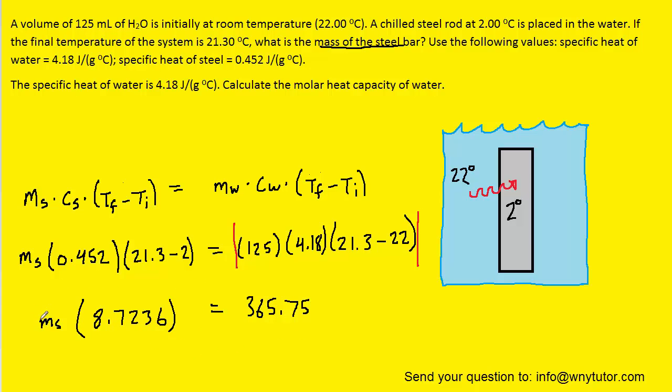At this point, since we're looking to solve for the mass of the steel bar, we can divide both sides of the equation by the 8.7, and that will give us our answer. We end up with approximately 41.9 grams. So this will be the correct answer to the first question.